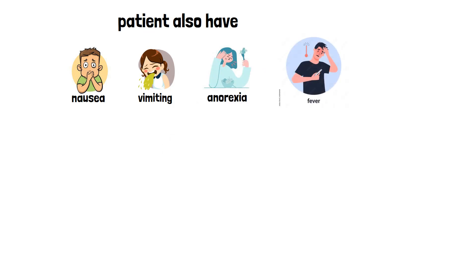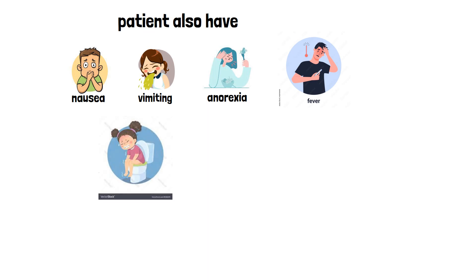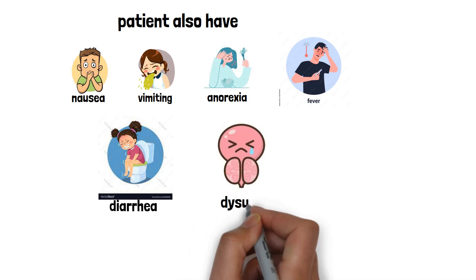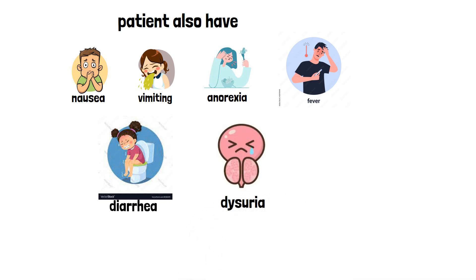There are some variations also present, like diarrhea, which is present in those patients who have an inflamed appendix that touches the rectum. Dysuria occurs due to the inflamed appendix touching the uterus.